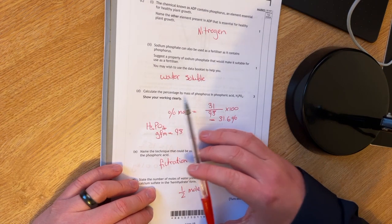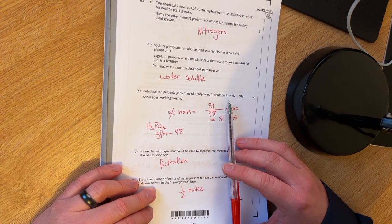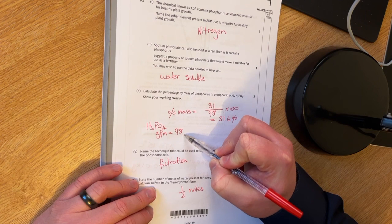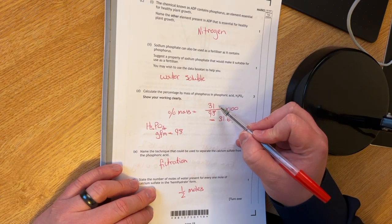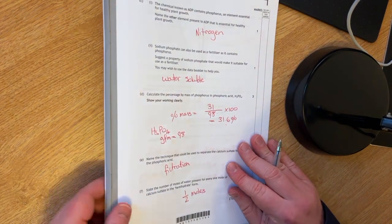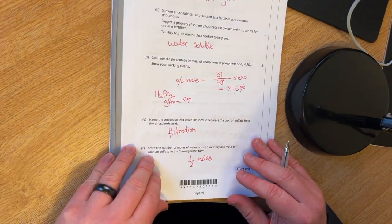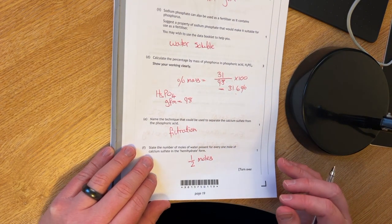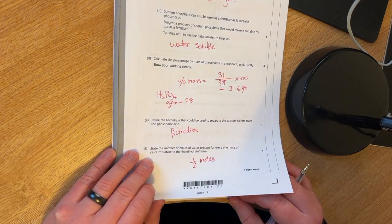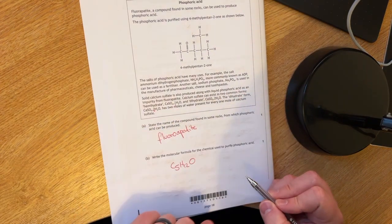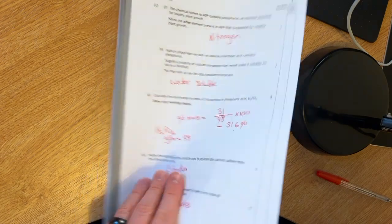Calculate the percentage by mass of phosphorus in phosphoric acid, H3PO4. So I worked out my GFM, which is 98. And then I did the mass of the phosphorus over the 98 times 100, which is 31.6%. You have to name a technique that could be used to separate the calcium sulfate from the phosphoric acid. Filtration. And then finally state the number of moles of water present for every one mole of calcium sulfate in the hemihydrate form. They told you that that was two moles. So that there is a half.